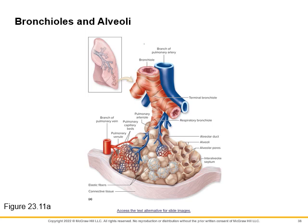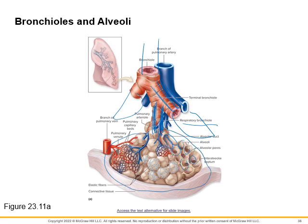Here we have the bronchiole, then the terminal bronchiole, then the respiratory bronchiole off of the terminal bronchiole. Off of the respiratory bronchiole, we have the alveolar ducts. Alveolar ducts lead to alveoli — this whole cluster is called an alveolar sac.